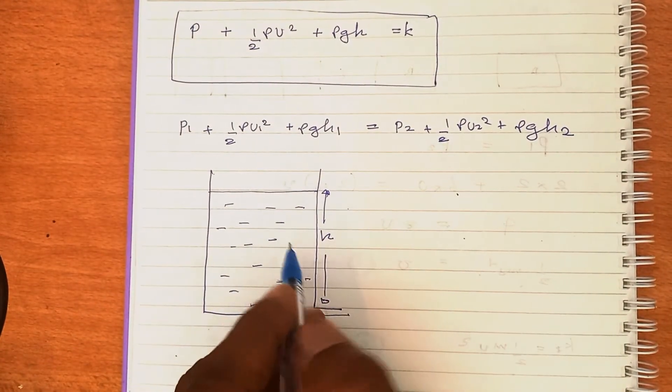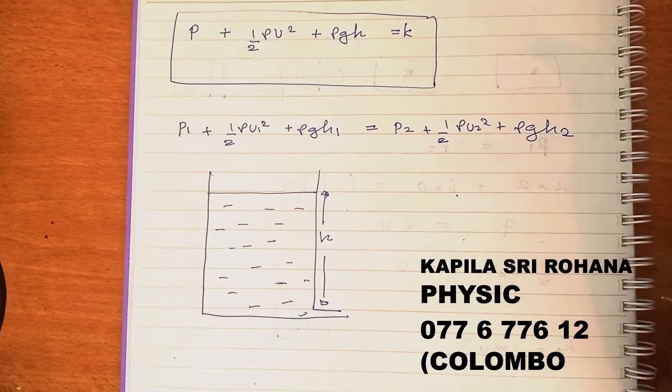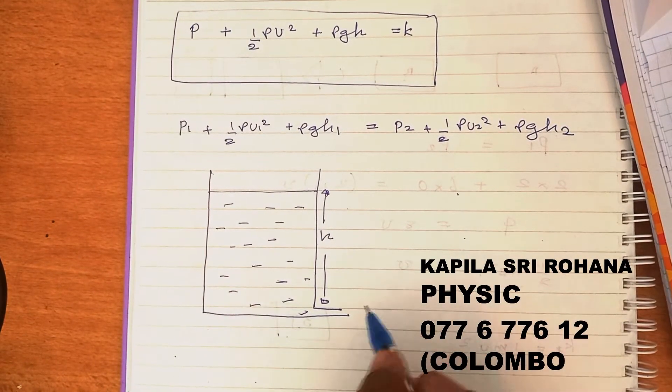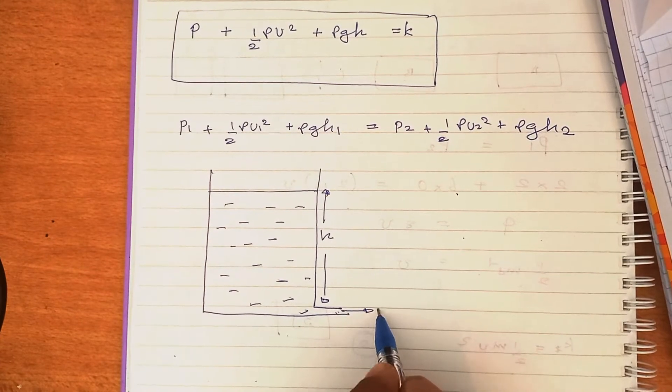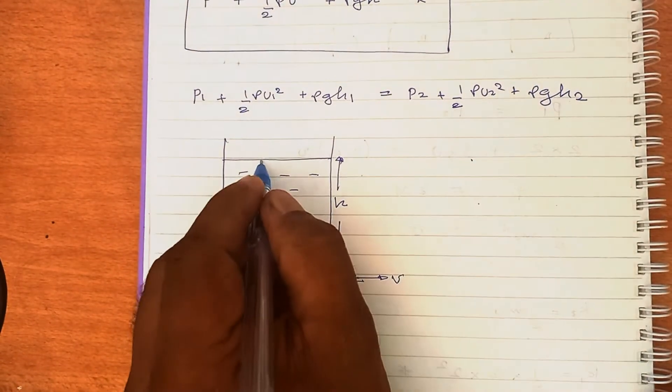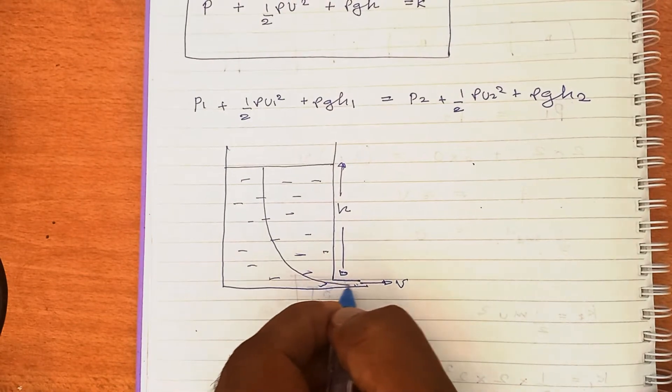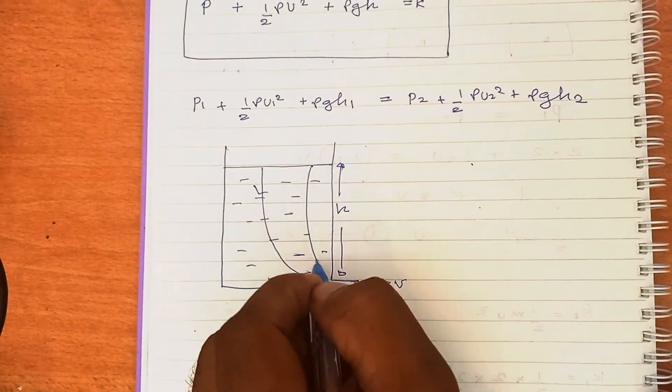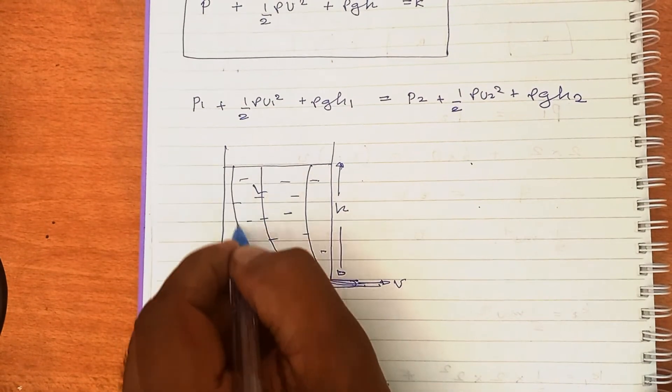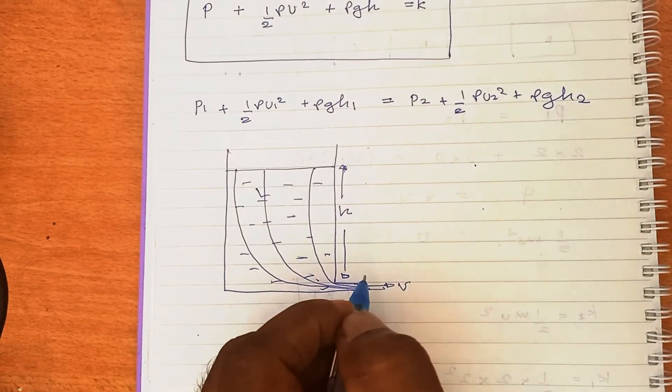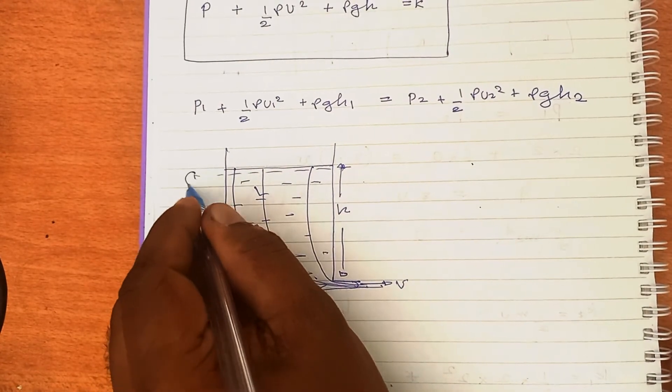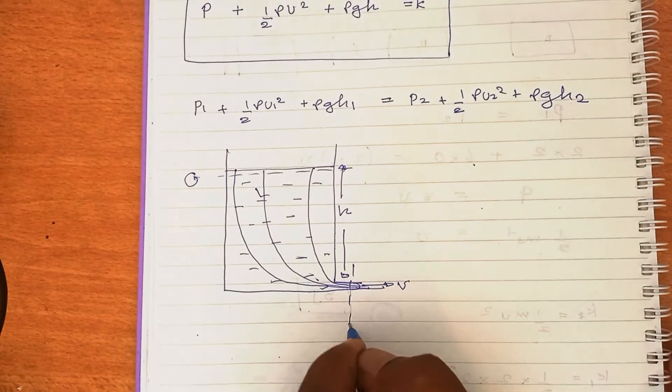This container is filled with water. You have to make an expression for the velocity of water ejecting through this hole in the streamline. This is cross section 1. This is cross section 2.